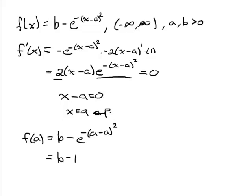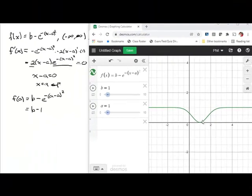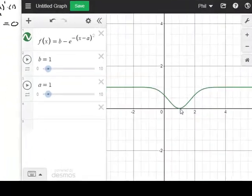So one thing we might want to do for this function is look at the graph. So here we see our graph, and we can clearly see we have a minimum. Right now, I've got my parameters both set to one, and we saw that our critical point was at a.